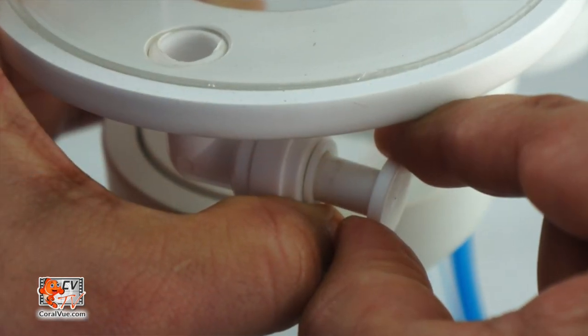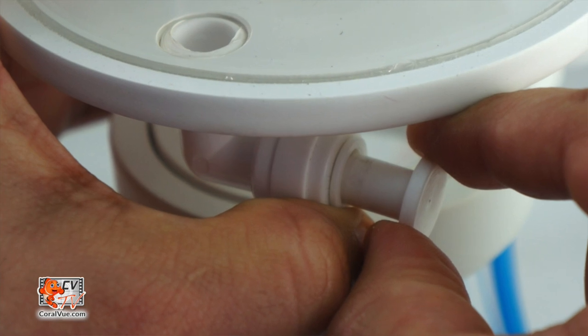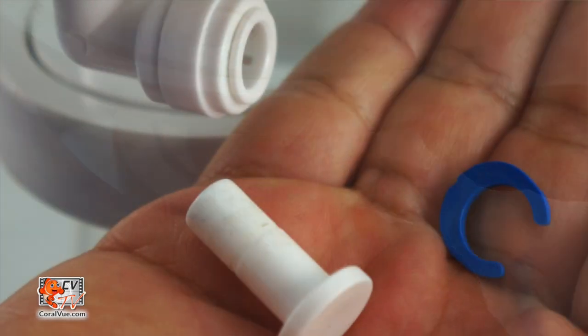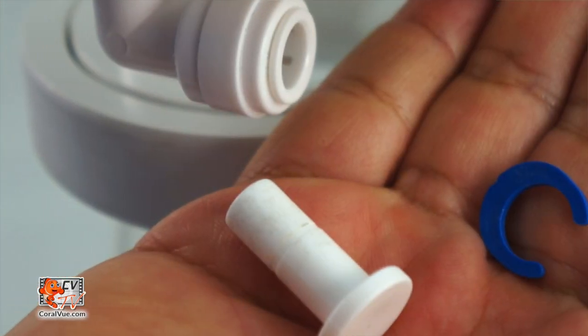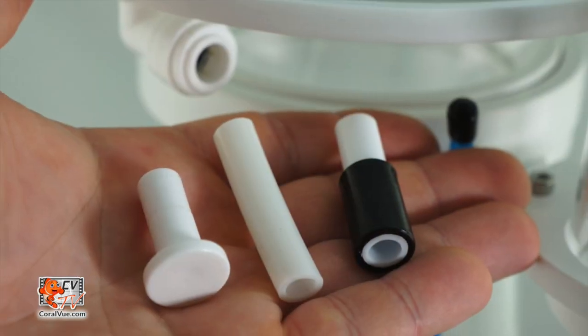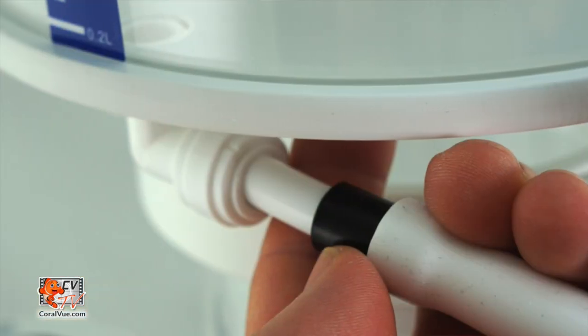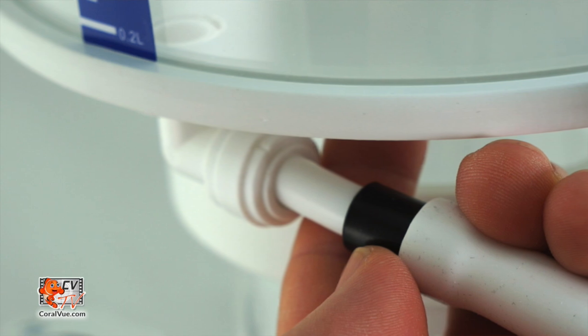Press the slip ring towards the drain fitting while pulling the plug outwards. Insert the drain into the hose adapter into the drain elbow. Reinstall the retainer clip and attach the drain hose.